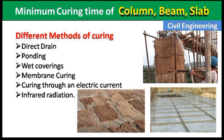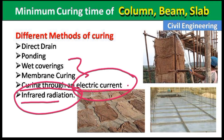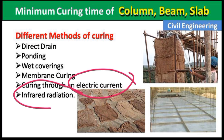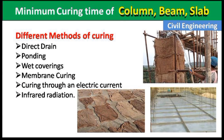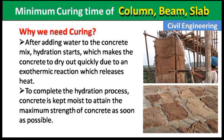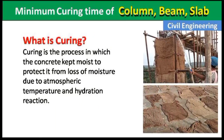The third method is wet covering or membrane curing, which involves wetting jute bags and placing them on the concrete where curing is needed. There is also curing through electric current and infrared radiation, which is generally not used for small projects but for large projects where there is no scarcity of electricity and a large amount of curing has to be done. So these are the different methods of curing, the minimum curing time, and why we need curing. Please like this video and subscribe to this channel for new updates about civil engineering. Thank you.